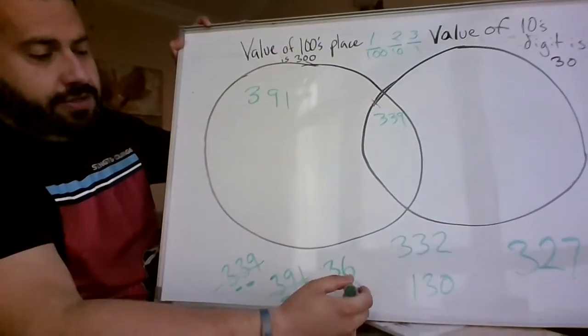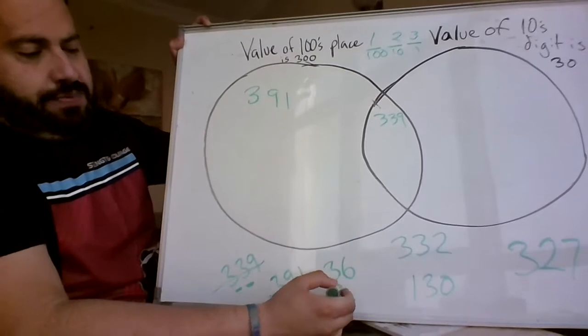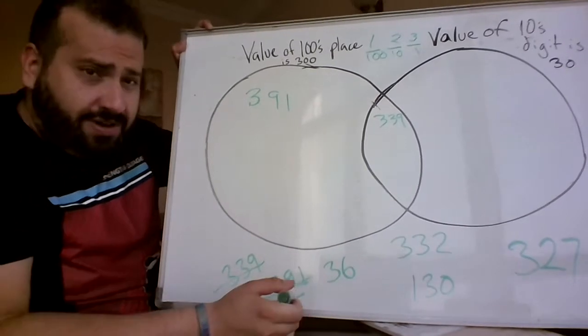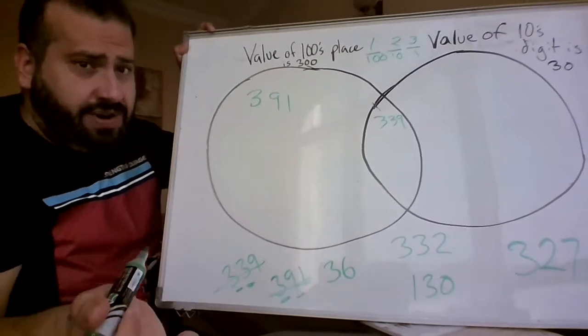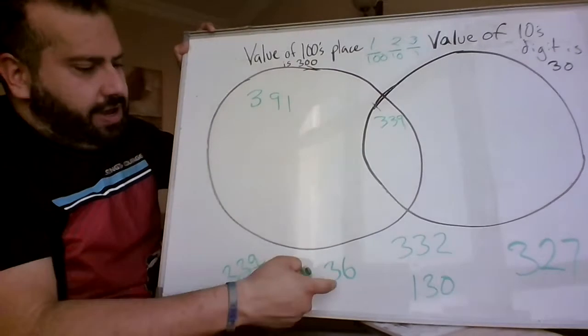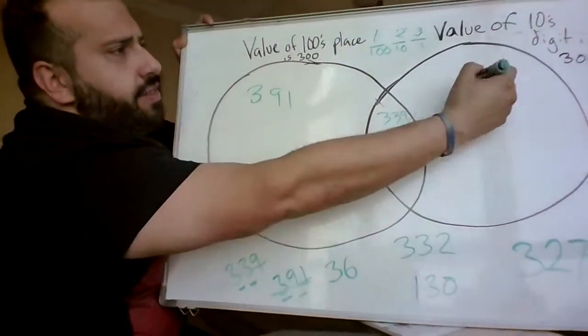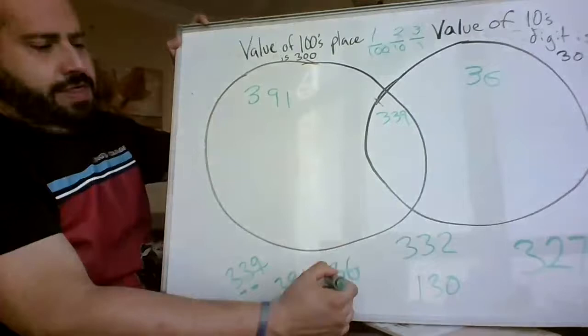Now look at our number here, 36. We have a 1s place. We have a 10s place. Do we have a 100s place? No, we don't even have one. So we know it doesn't go over here, but we see our 3 in the 10s place. That number goes over there.